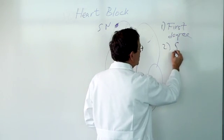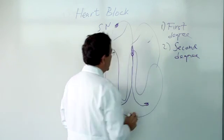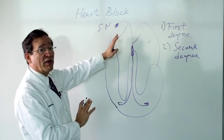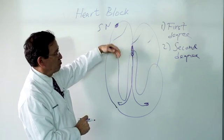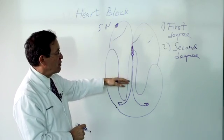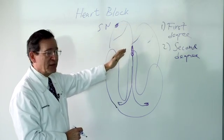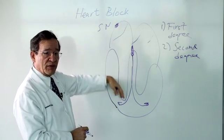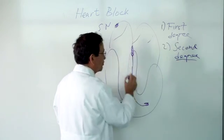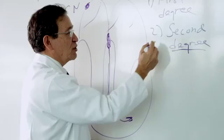Then there's what we call second degree. In second degree the impulses get down to the lower chamber but not every one of them gets down. So maybe every third one blocks over here in the bridge and doesn't get down there. So the lower chamber doesn't beat as fast as your natural pacemaker is trying to drive the heart at. Sometimes maybe every other beat gets down to the lower chamber. So second degree means that there are blocked beats and some of them that don't get down there at all but some do get through.